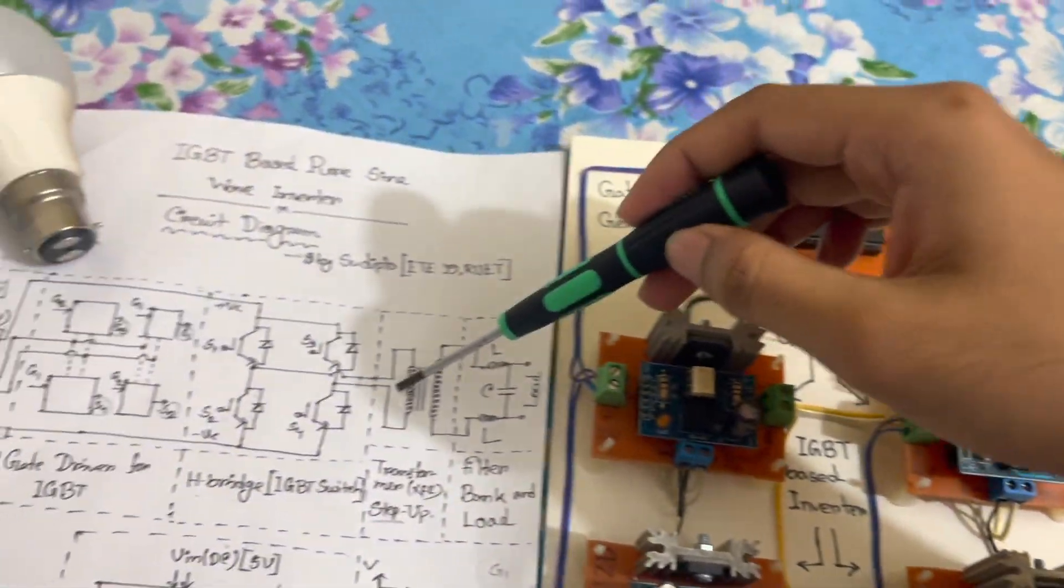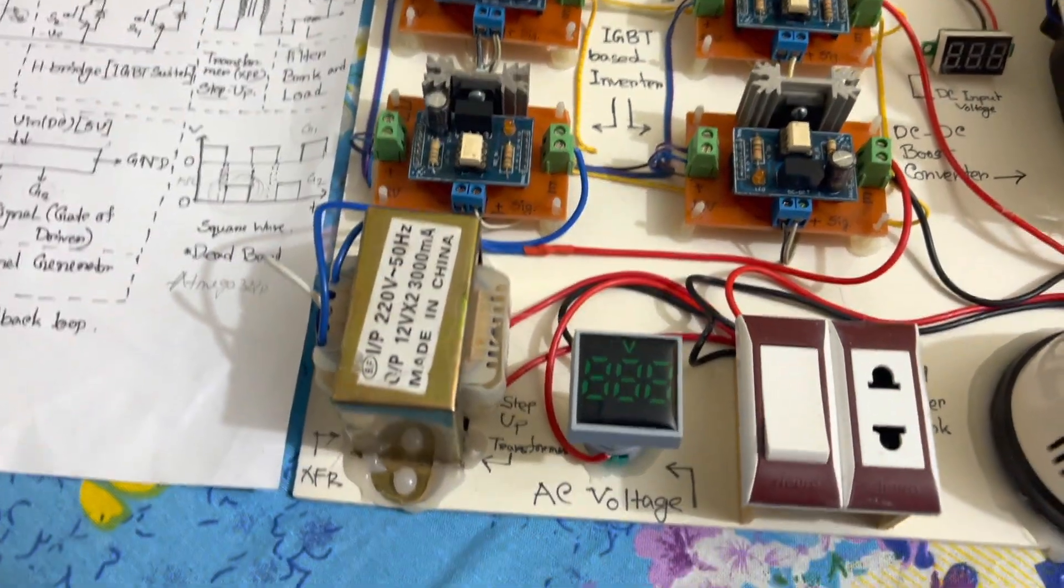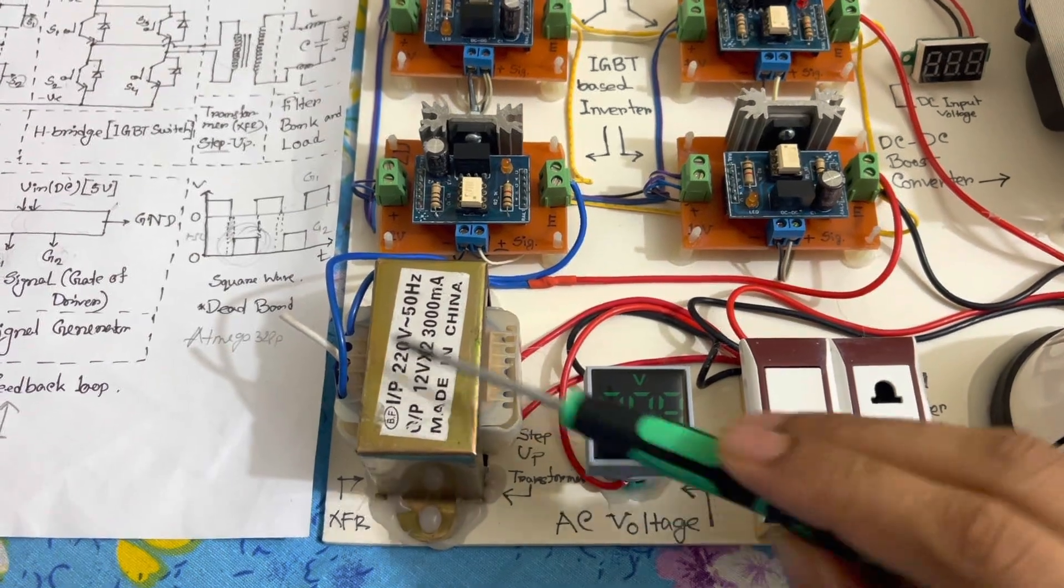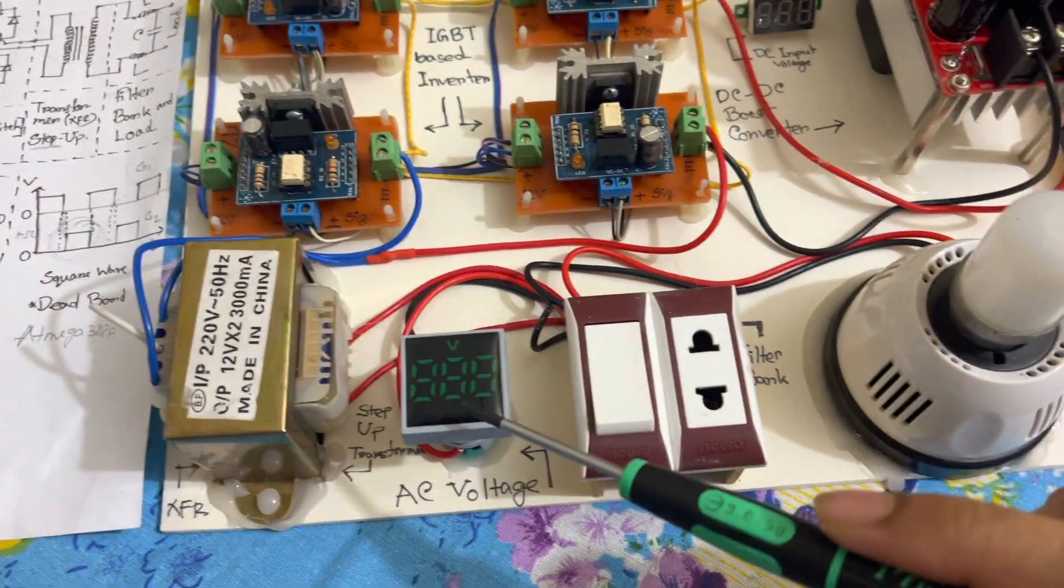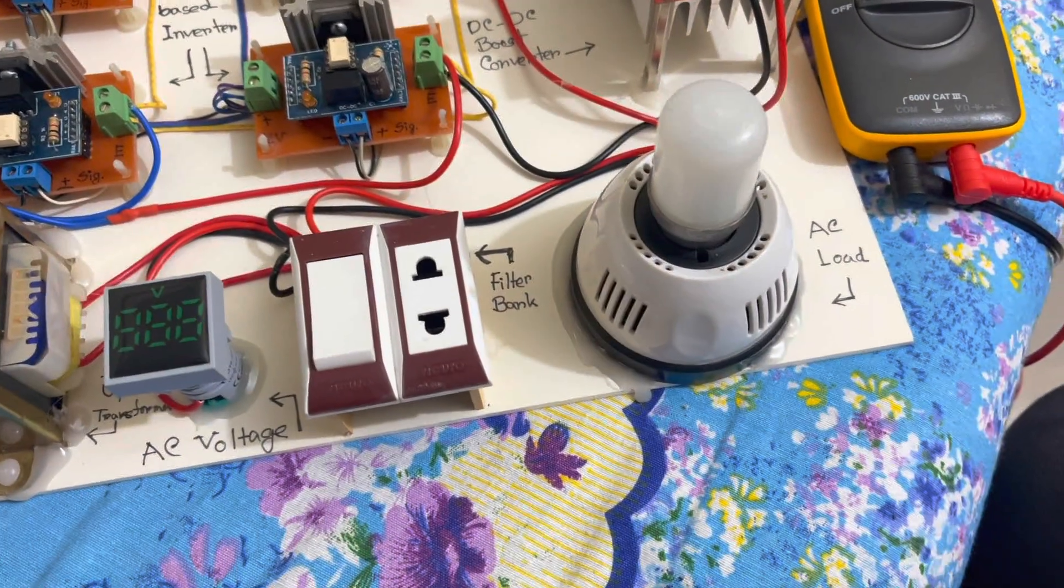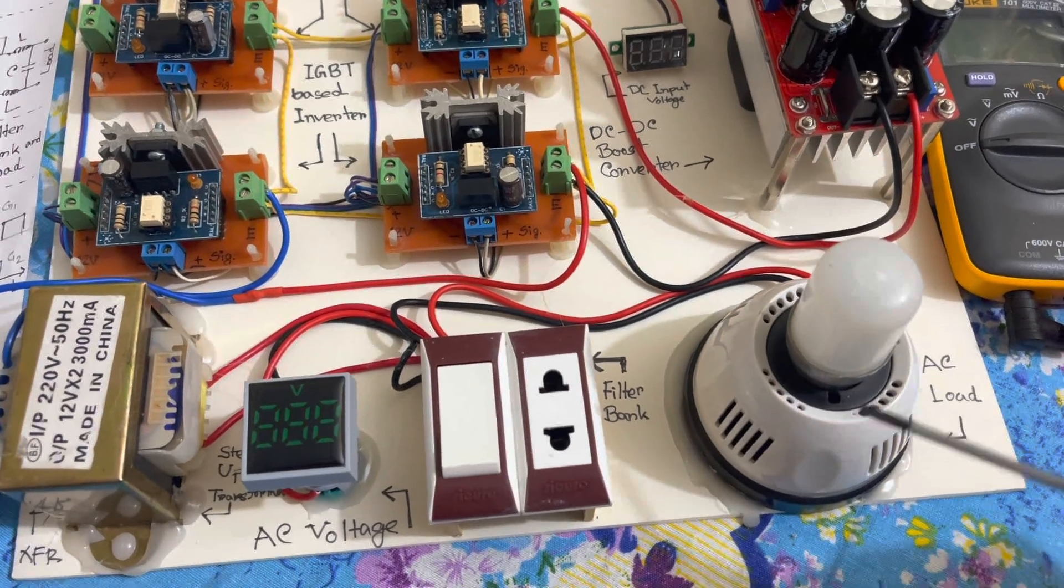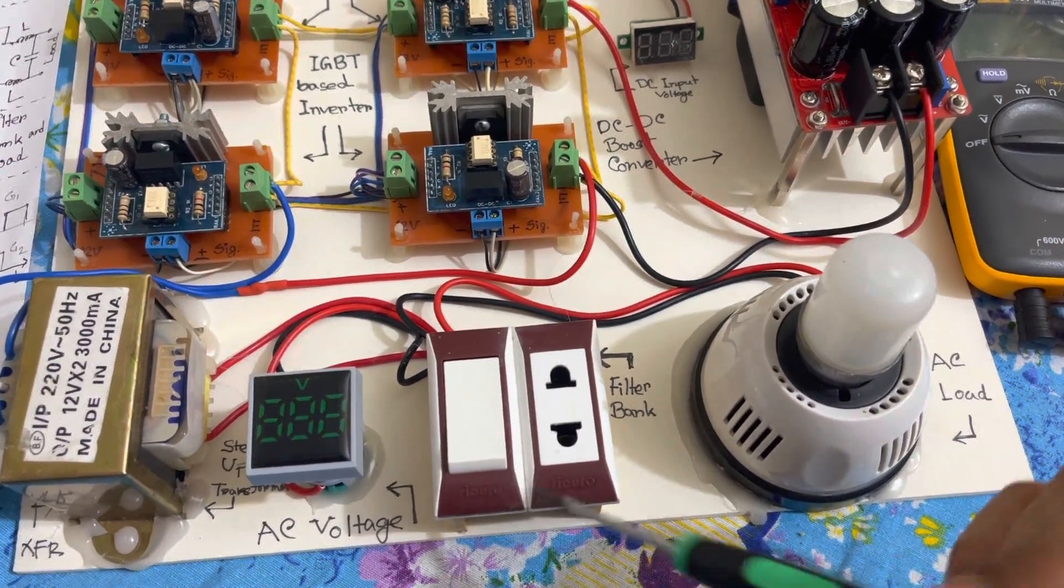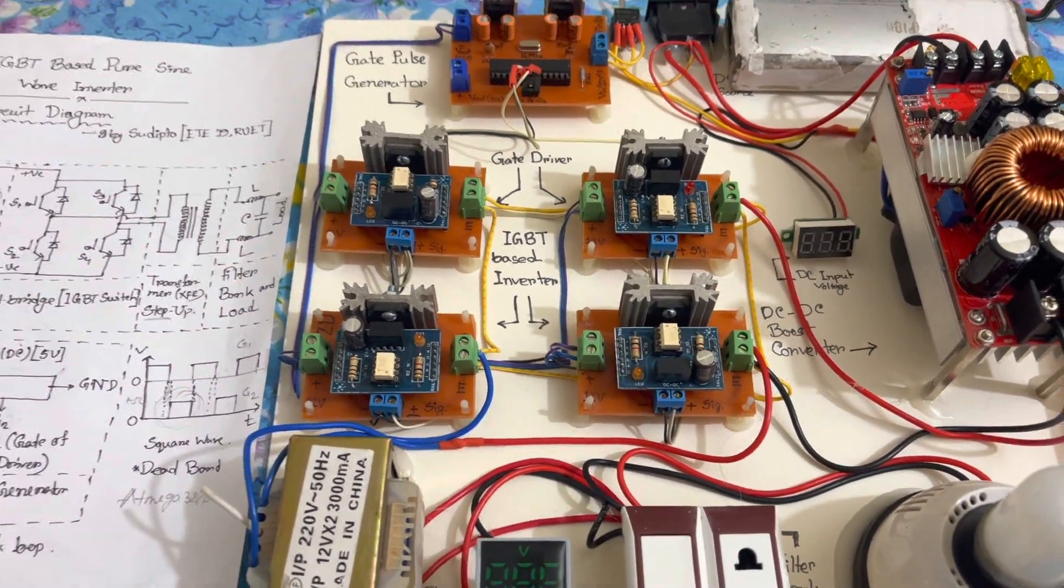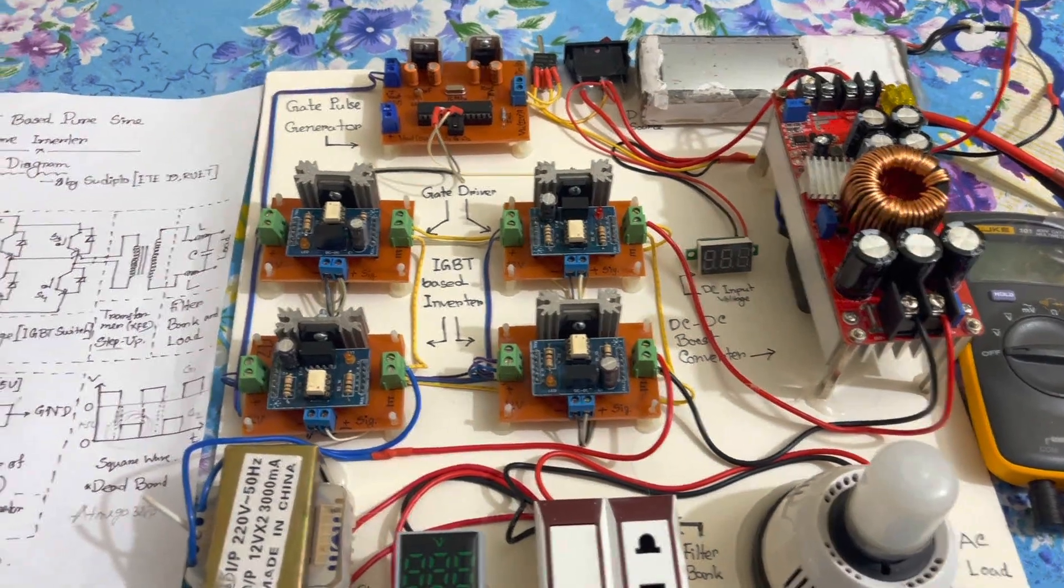Next, the transformer part. This is actually the transformer - a step-down transformer actually, but I used it in reverse mode. This is a simple AC voltmeter and this is our corresponding AC load. You can see this is our AC load and this is a simple switch for the AC load. This is all the circuit construction or the main hardware construction of my proposed inverter.